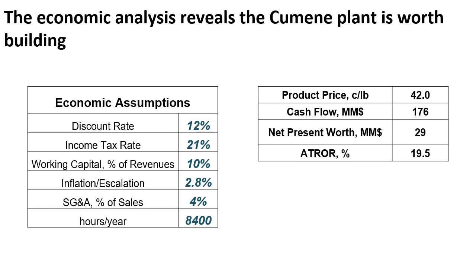The total economic evaluation reveals a cumulative cash flow of $176 million and a net present worth of $29 million at the end of the project life. Selling cumene at a market price of $0.42 per pound yields an after-tax rate of return of 19.5%. The plant will take a little over six years to have a return on capital. The analysis shows the cumene plant is worth building because its after-tax rate of return is higher than the minimum 15%, though the return occurs after the preferred four years.